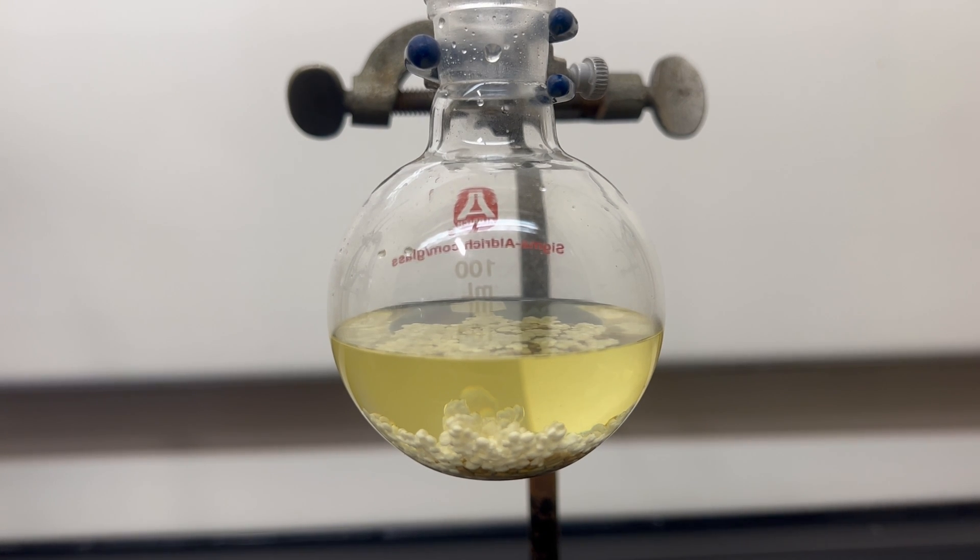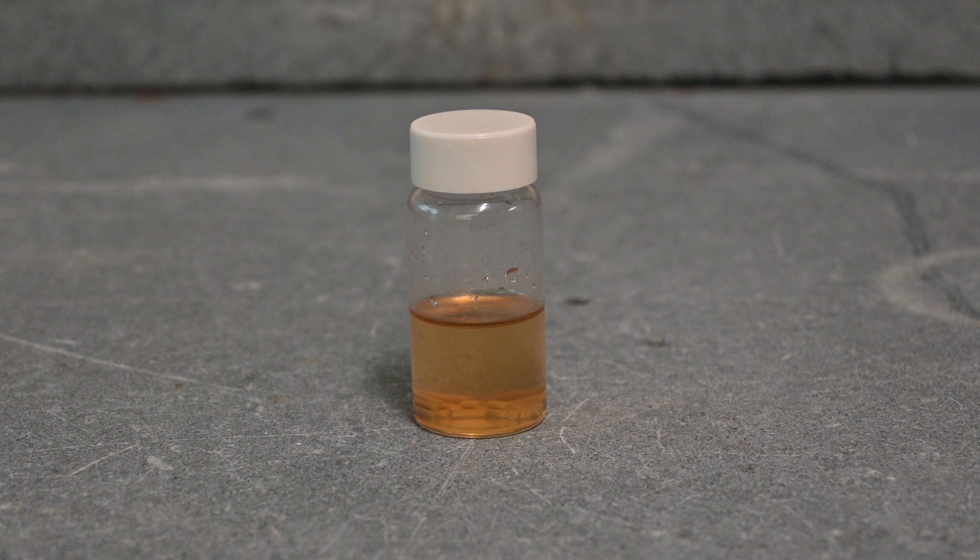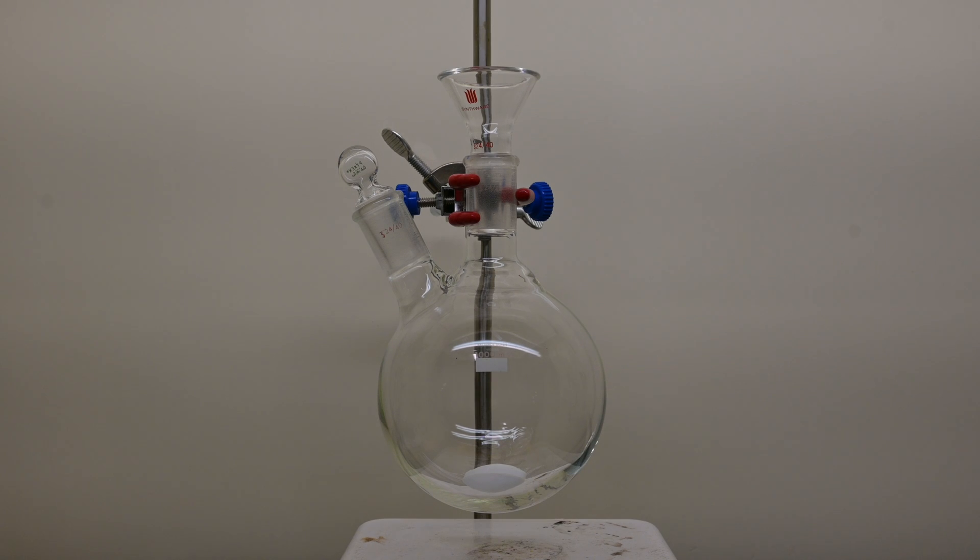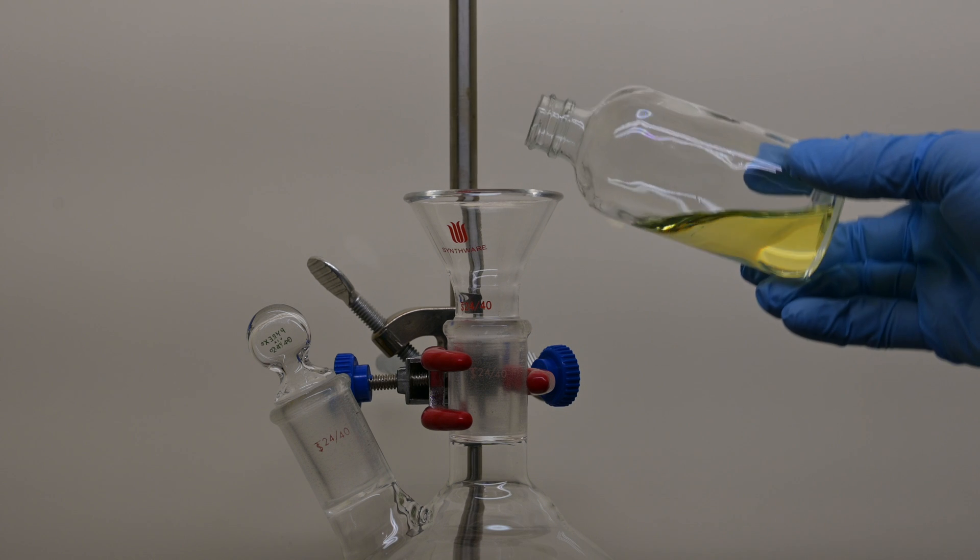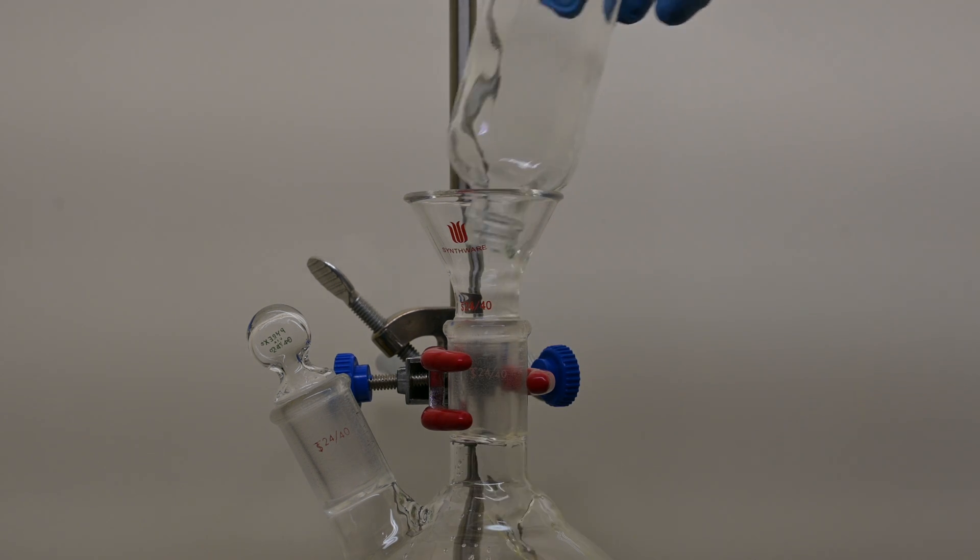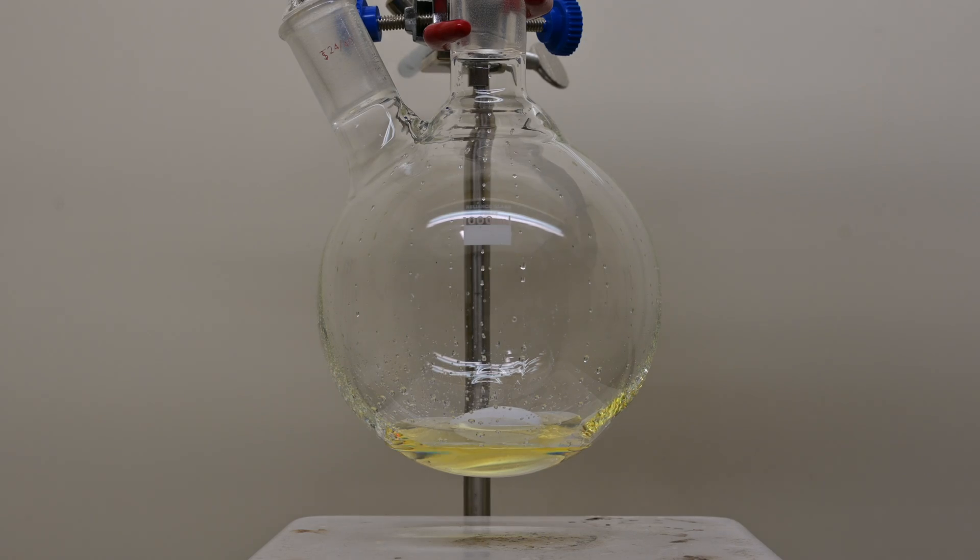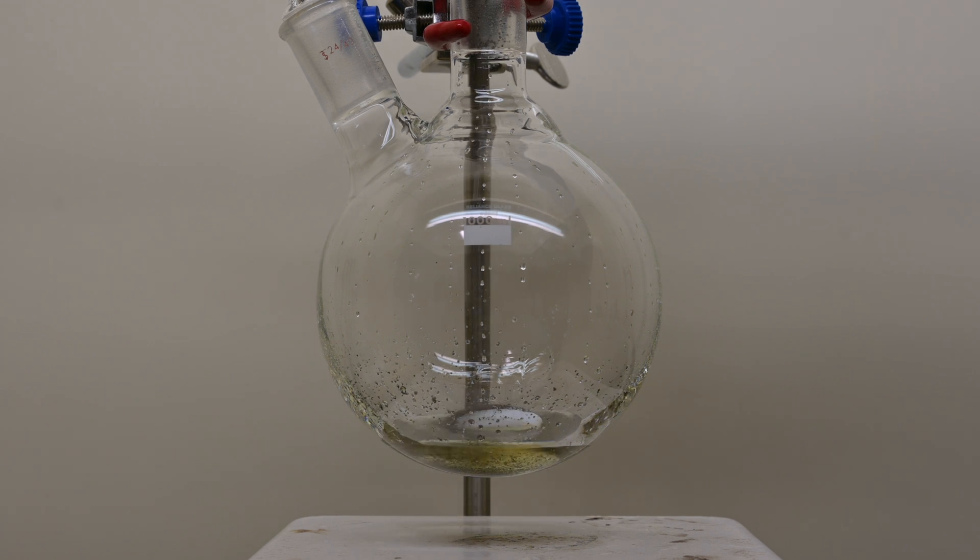Today we'll be converting it into aniline, a key chemical in the manufacture of dyes, drugs, and polymers. We begin with a 1 liter 2 neck round bottom flask, and into the flask we add 25 grams of nitrobenzene.